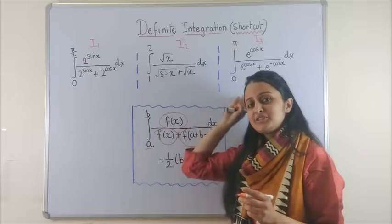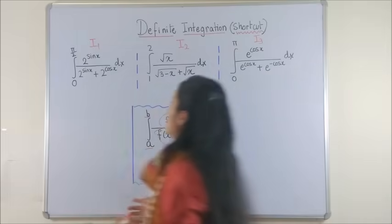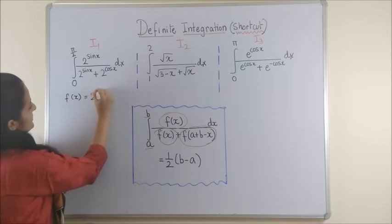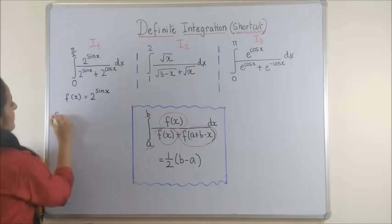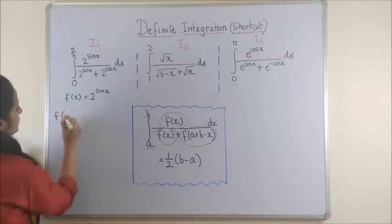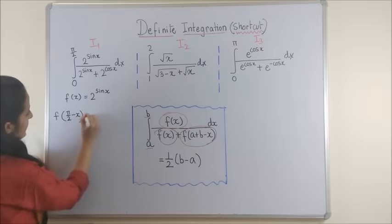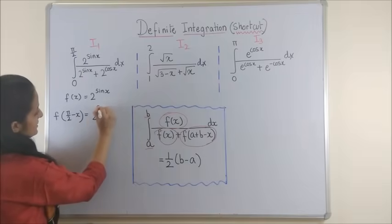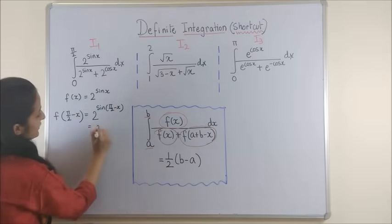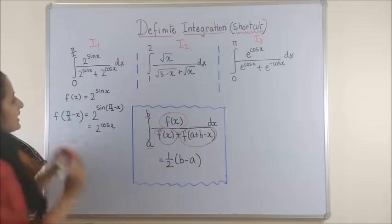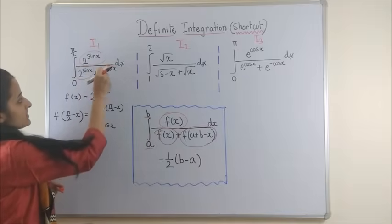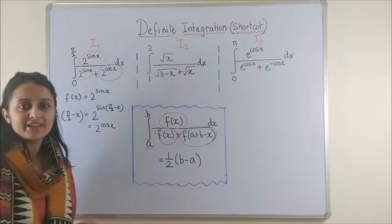Let's check all the 3 questions once again. So here, as you can see, my f of x is 2 raised to the power sin x. Now, my f of a plus b minus x should be 0 plus pi by 2 minus x, which is simply pi by 2 minus x. So if I substitute sine of pi by 2 minus x, that gives me 2 raised to the power cos x. So that means the function is in the form fx upon fx plus f of a plus b minus x.